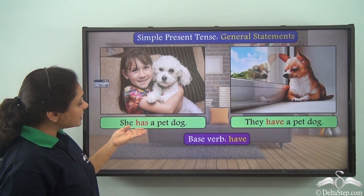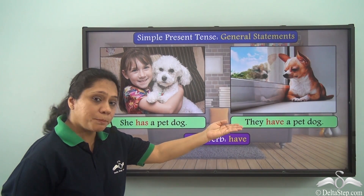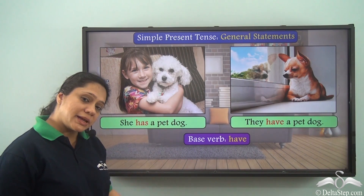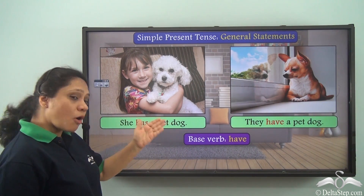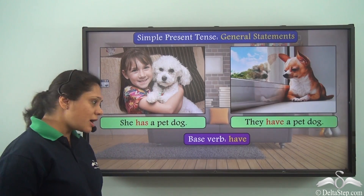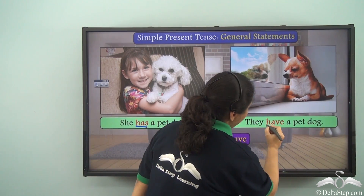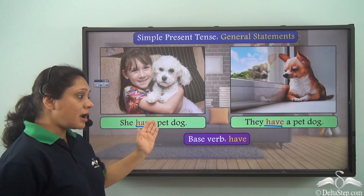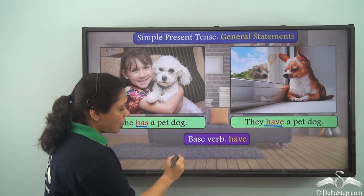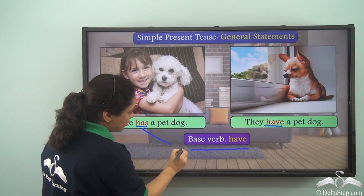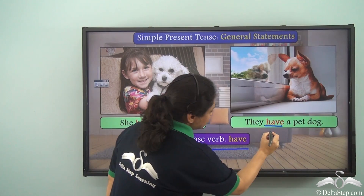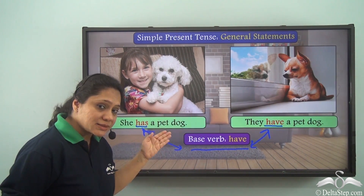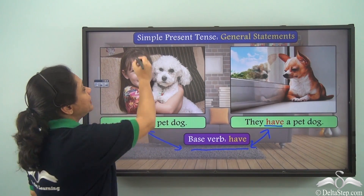She has a pet dog. They have a pet dog. Both these sentences are general statements. The verbs are has and have. Has and have are singular and plural forms of the base verb have. Has is the singular form and have is the plural form. So both these sentences are in the simple present tense.